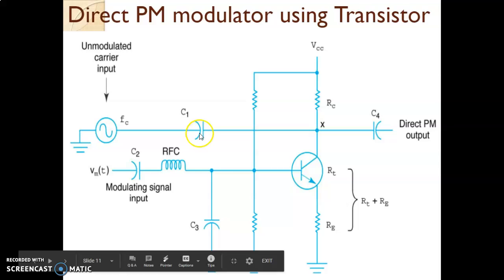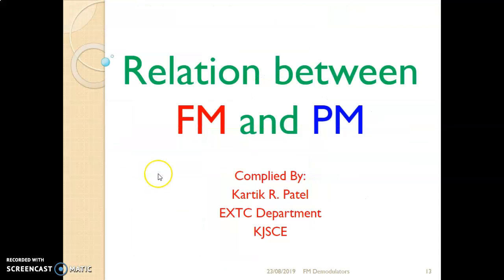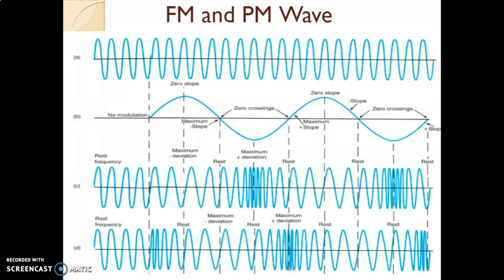Initially, one RC network produces a phase shift of 45 degrees, which is later changed when the modulating signal is applied, and hence direct phase modulation is obtained. One more point I want to highlight is the relationship between FM and PM, which I would like to explain with the help of this waveform.